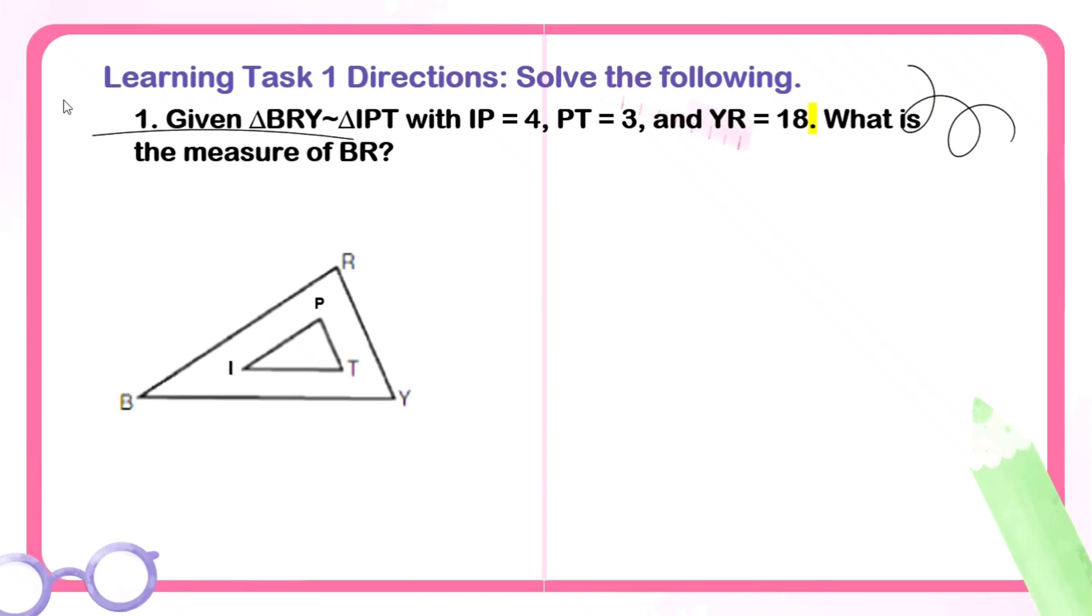For the first one, we have this triangle. Triangle BRY is similar to triangle IPT with IP equal to 4, PT equal to 3, and YR equal to 18. What is the measurement of segment BR? Let's write down the given. IP is equivalent to 4, PT is 3, and YR is 18. The segment BR is our x, which is the unknown. We'll apply what we learned about similar triangles.